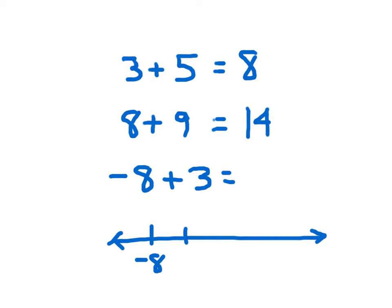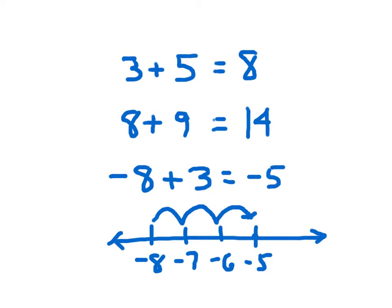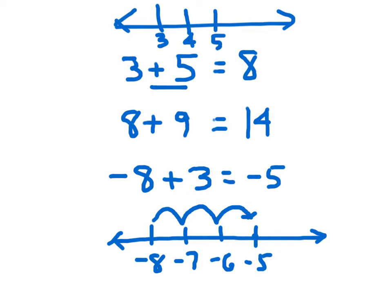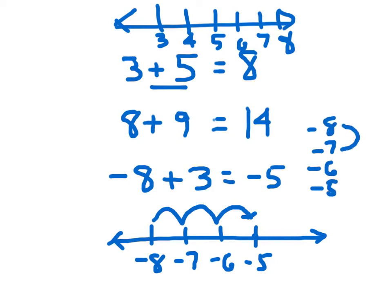If we had started at negative 8 and we go up 3 from there — 1, 2, and 3 — we would end up at negative 5. Just as when we were going from 3 to 8, we went plus 5, meaning we would go towards the right. So if we're adding a positive number to a negative number, we move to the right on a number line, or we count up. Up from negative 8 is negative 7, negative 6, then negative 5.